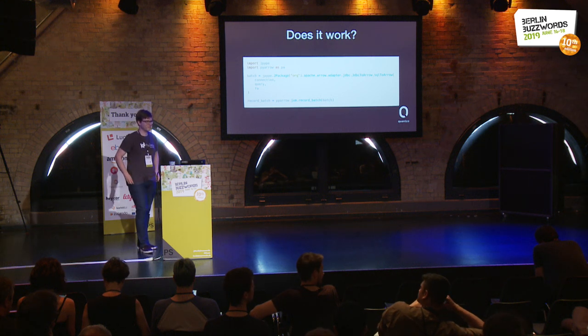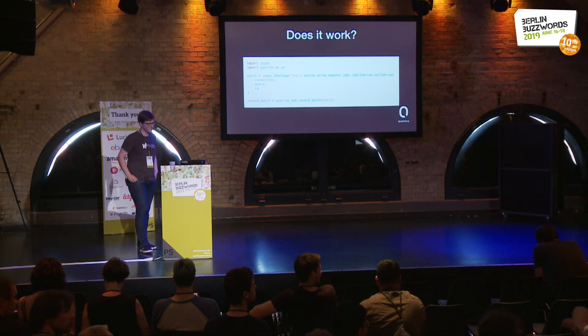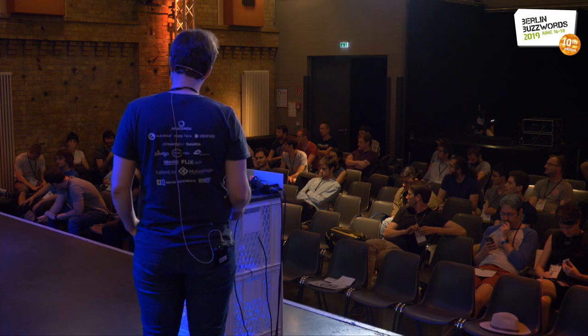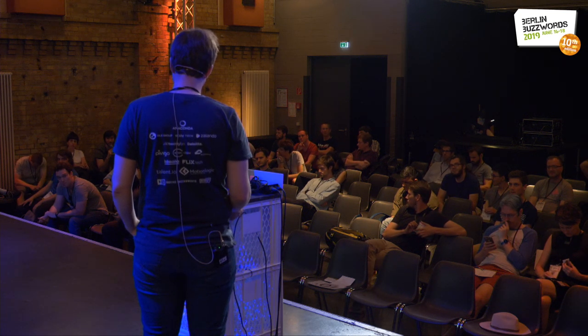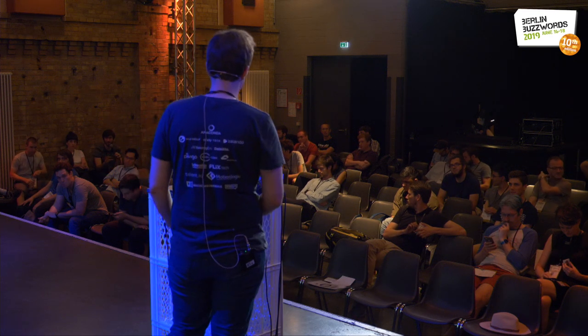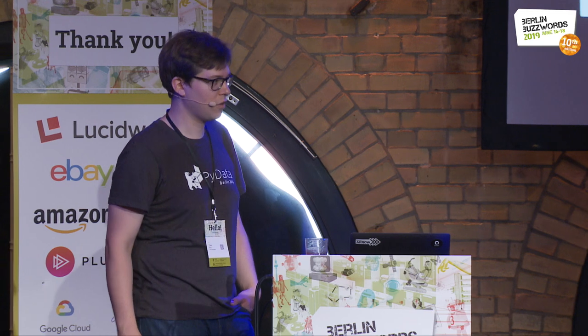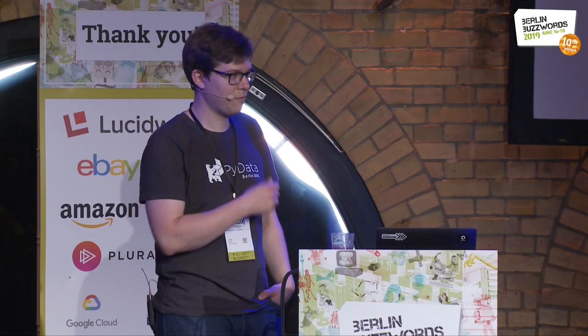Question comparing Arrow to FlatBuffers, Cap'n Proto, and similar formats: The main advantage of Arrow is definitely the columnar layout. FlatBuffers is quite generic and we use it for schema passing because it has serialization overhead — but we focus on the columnar aspect. There's more explanation in our FAQ.